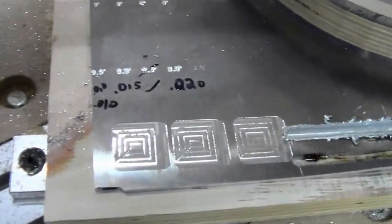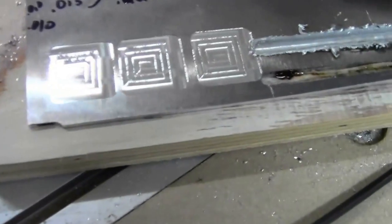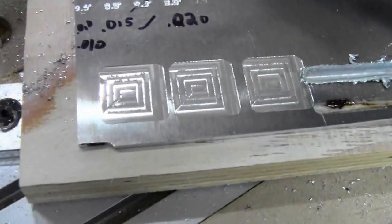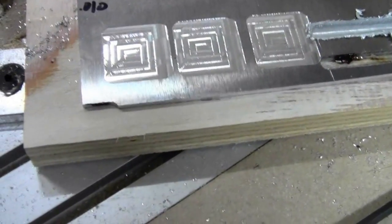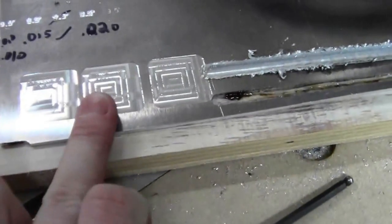So right here you can see there's a pocket that I did first that was cut at 20 inches per minute, a depth of I believe it was five thou. I did the same thing here.